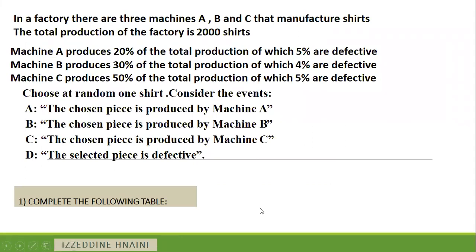In a factory, there are three machines A, B, and C that manufacture shirts. The total production is 2000 shirts. Machine A produces 20% of the total production. Machine B produces 30% and Machine C produces 50%. Each machine may produce a defective or a non-defective shirt. Out of the items produced by A, 5% are defective. Out of the items produced by B, 4% are defective. And out of the items produced by C, 5% are defective.